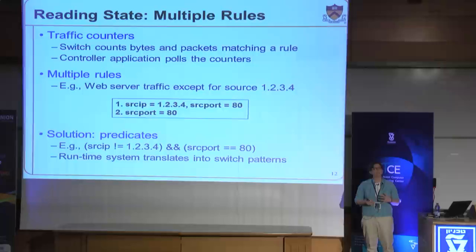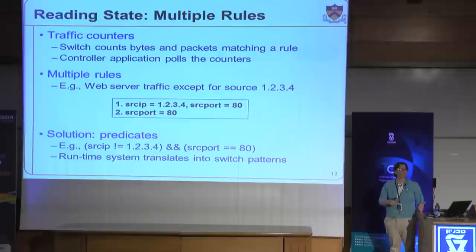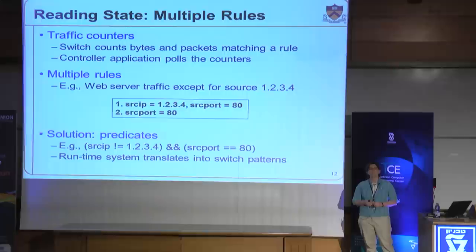A simple thing we do — not particularly deep but it helps — is to allow the programmer to write these kinds of queries with predicates using simple Boolean logic to specify which traffic they want to collect statistics for. Later in the runtime system, underneath the program the user writes, we translate that into a prioritized list of rules that accurately represent that predicate.